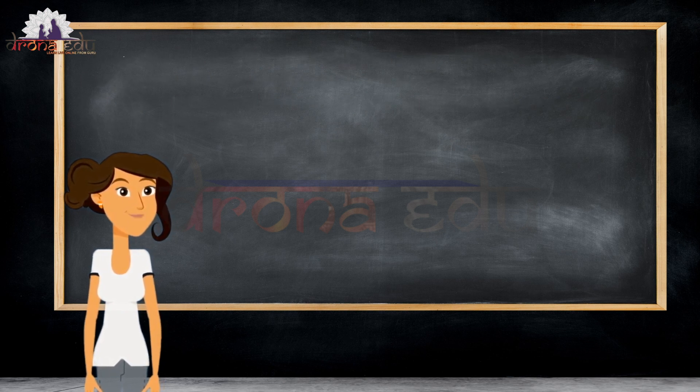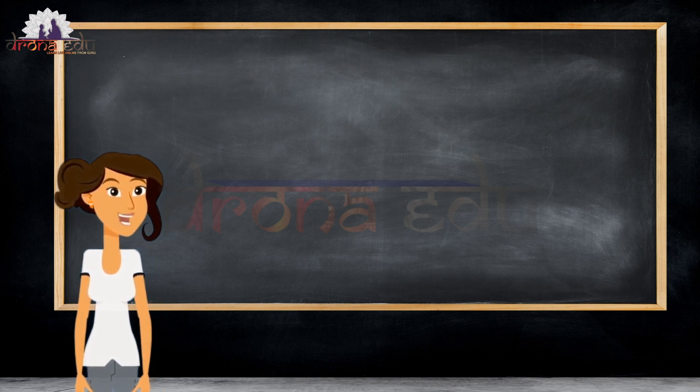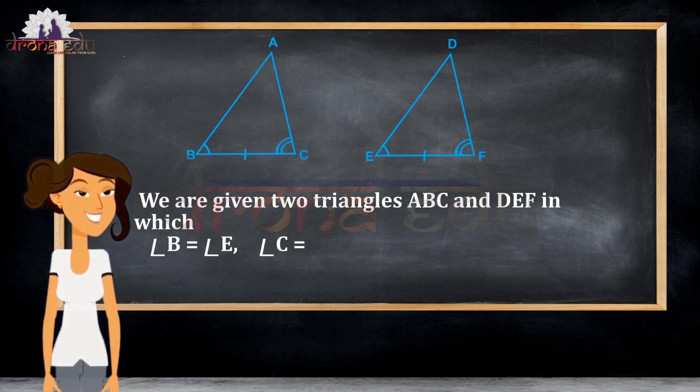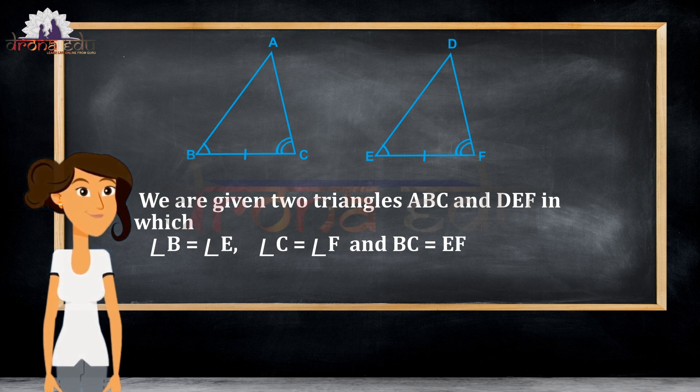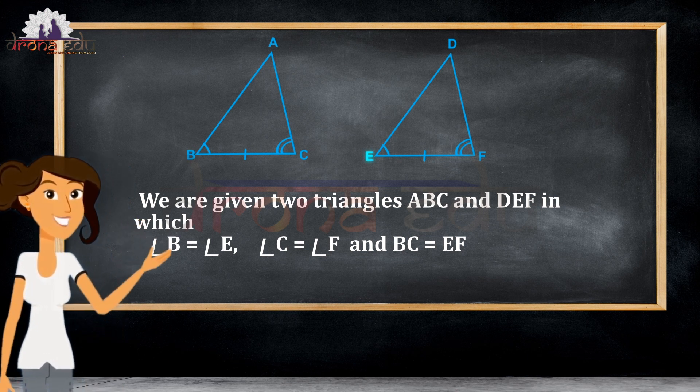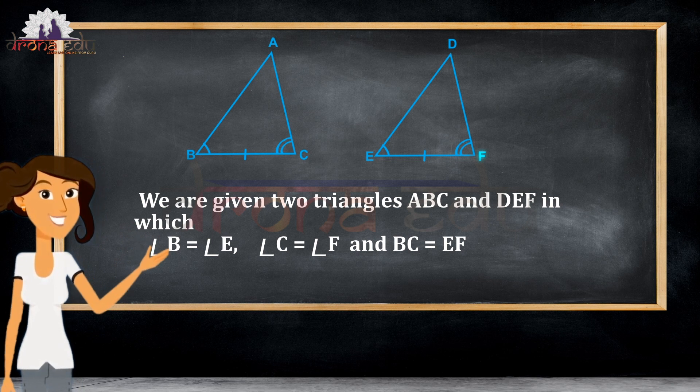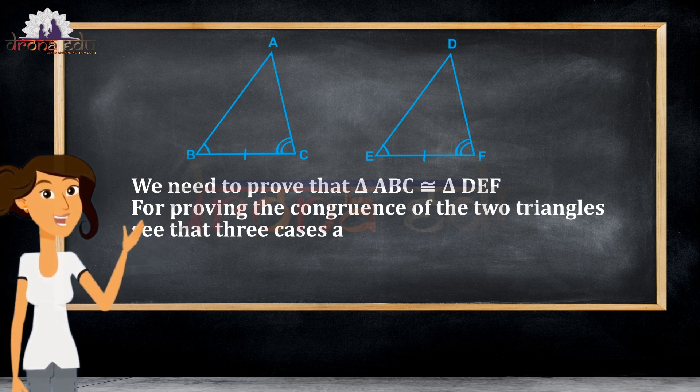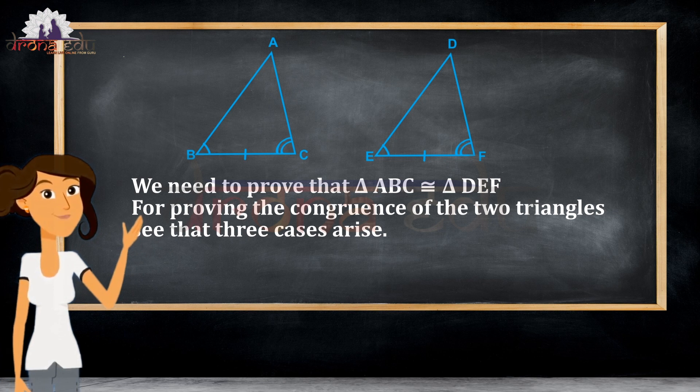Now let us do the proof. For the proof, we are given two triangles, ABC and DEF. Here, angle B equals angle E, angle C equals angle F, and BC equals EF. We need to prove that triangle ABC is congruent to triangle DEF.